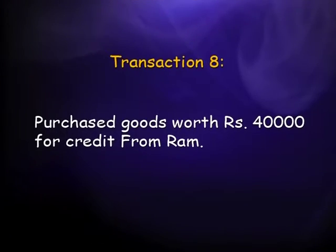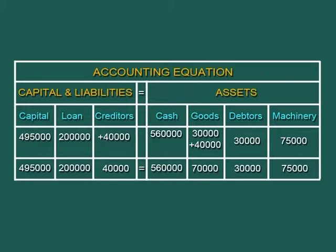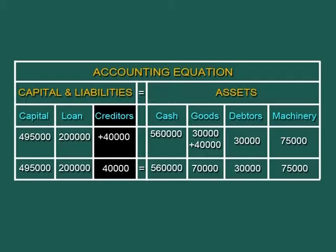Eighth transaction: we purchased goods worth rupees 40,000 on credit from Ram. Since purchased on credit, there is a new liability — creditor Mr. Ram — for rupees 40,000. Goods increase from 30,000 to 70,000 rupees. This makes the equation balanced again.